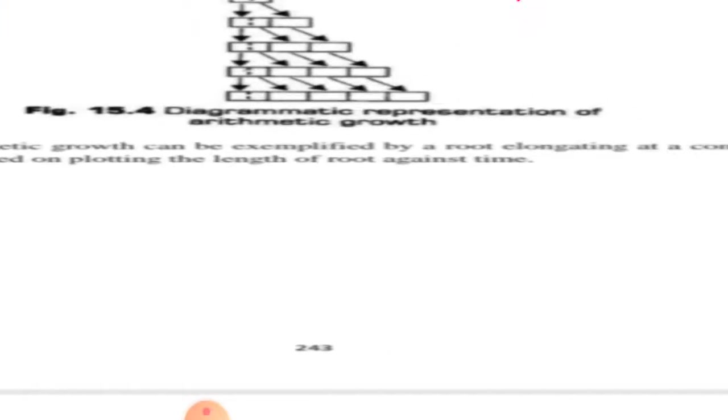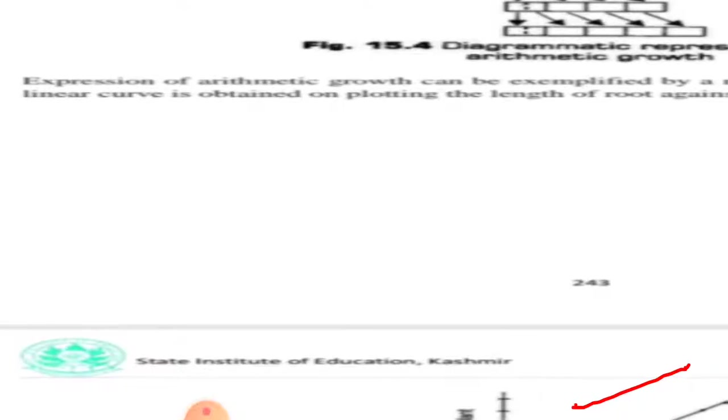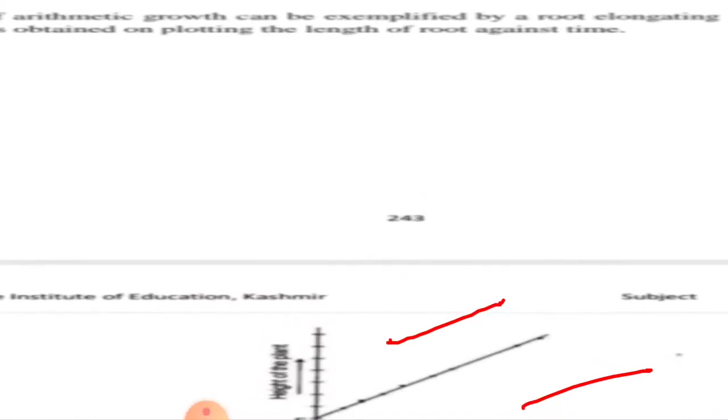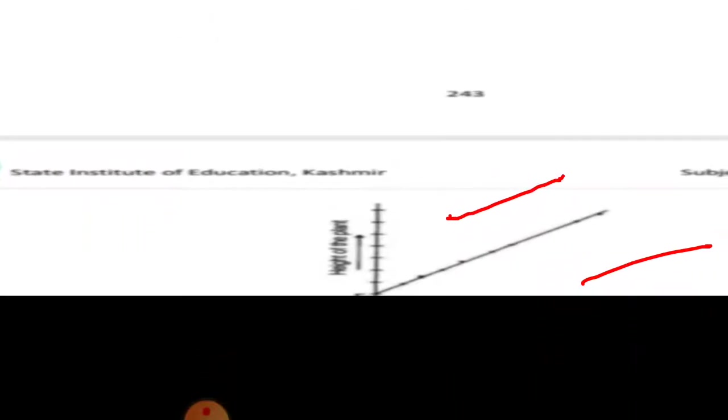It is exemplified by root elongation. At a constant rate, a linear curve is obtained on plotting the length of the root against time. In this case, the rate of growth is constant.